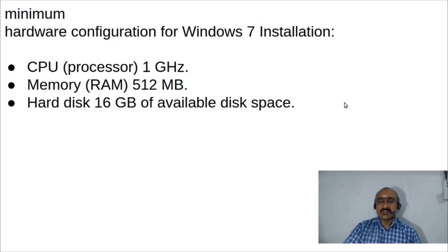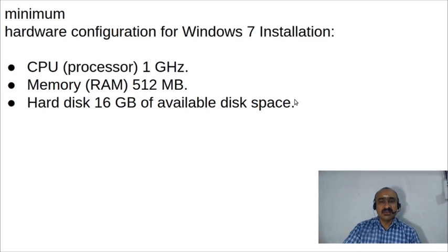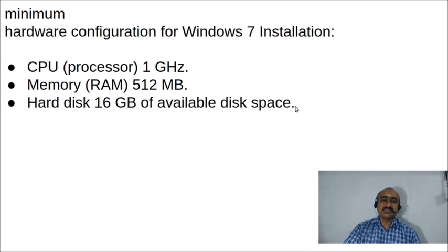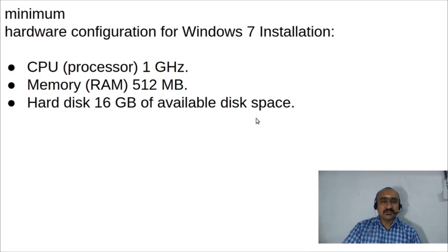For RAM, the minimum size of random access memory must be 512 MB. Nowadays computers have an average RAM capacity of 4 GB, so 512 MB is sufficient. For the hard disk, the minimum capacity must be 16 GB. Today's computers typically have 512 GB or even 1 terabyte. So this is the minimum hardware configuration for installing Windows 7.